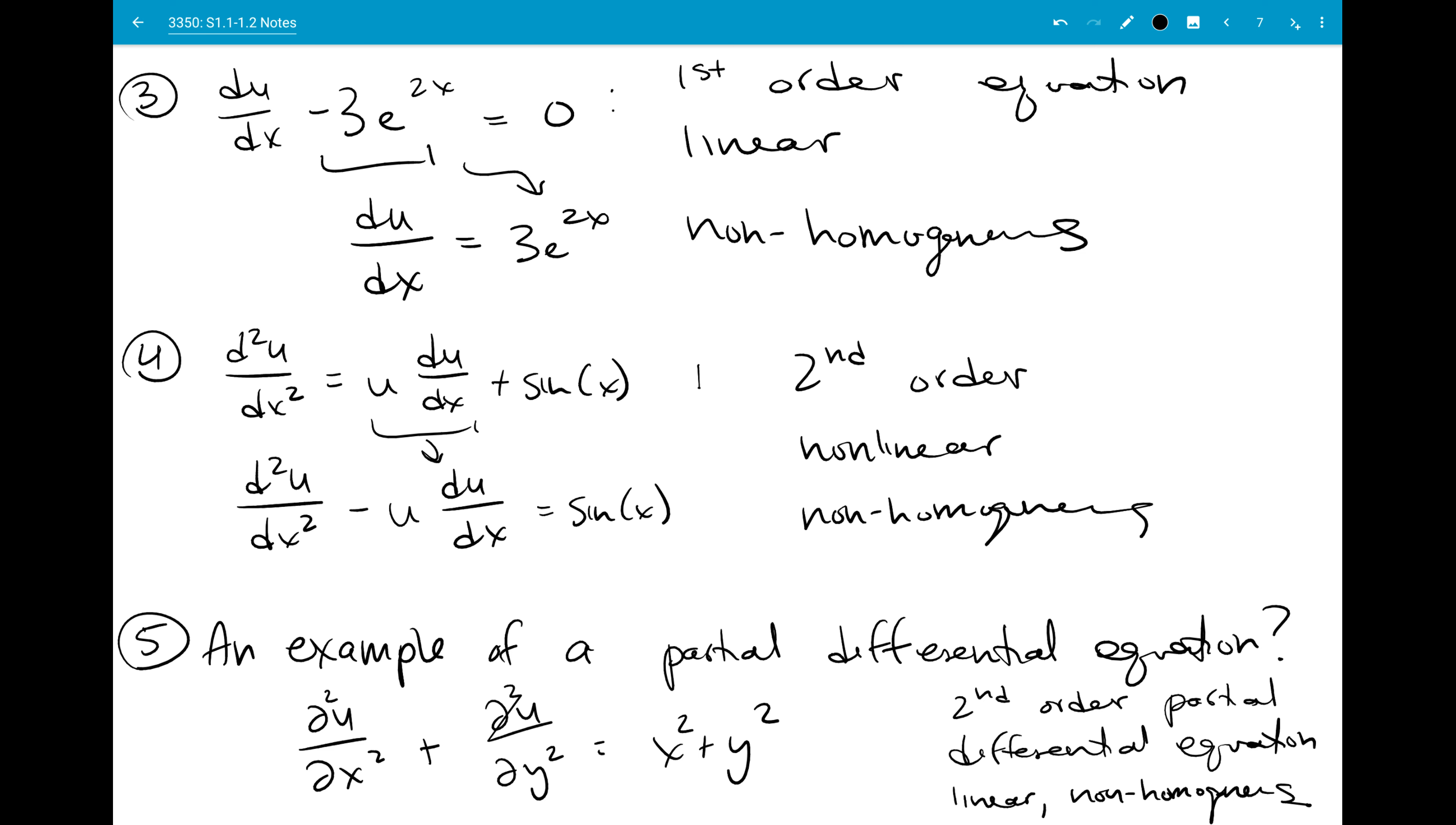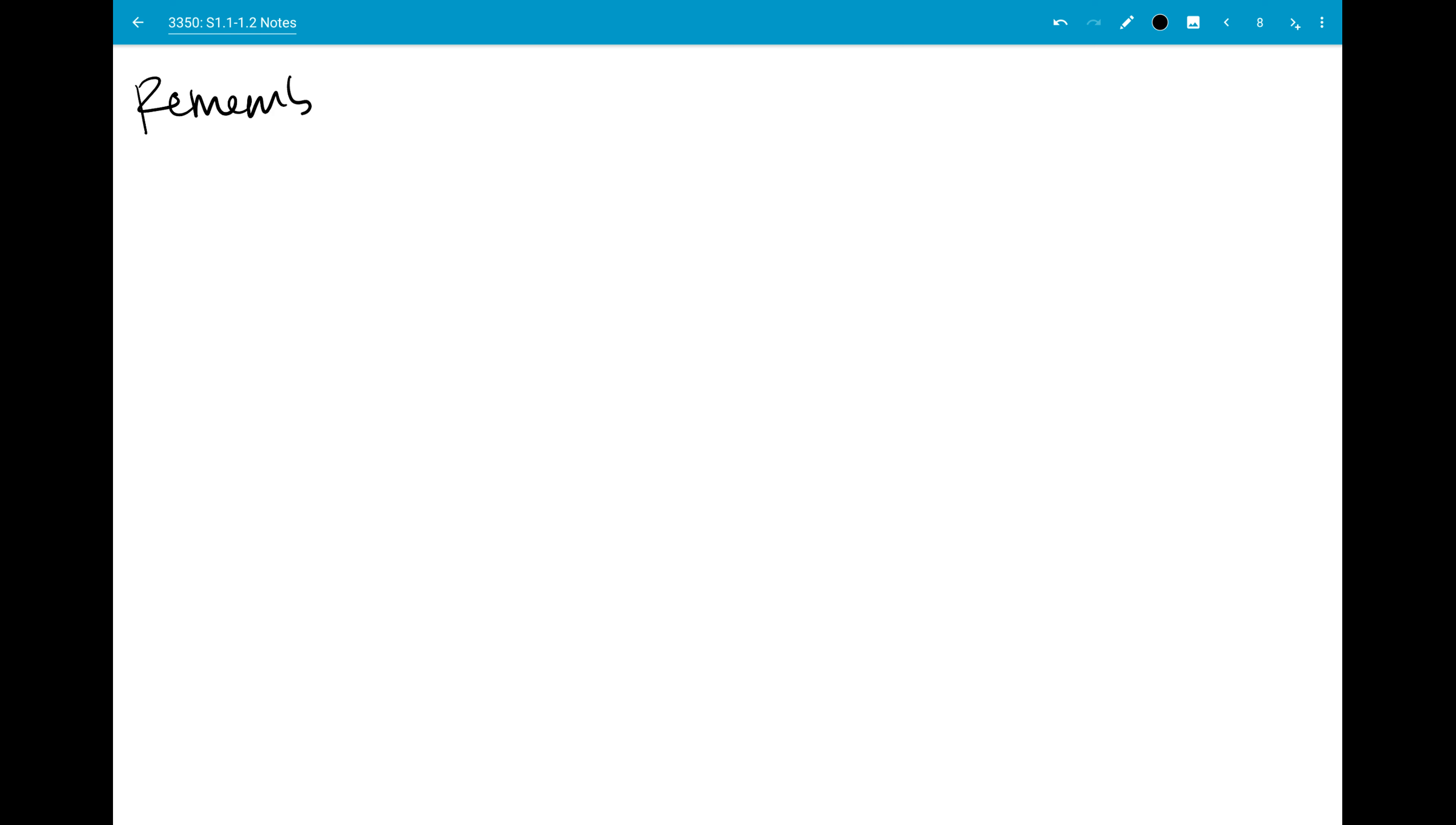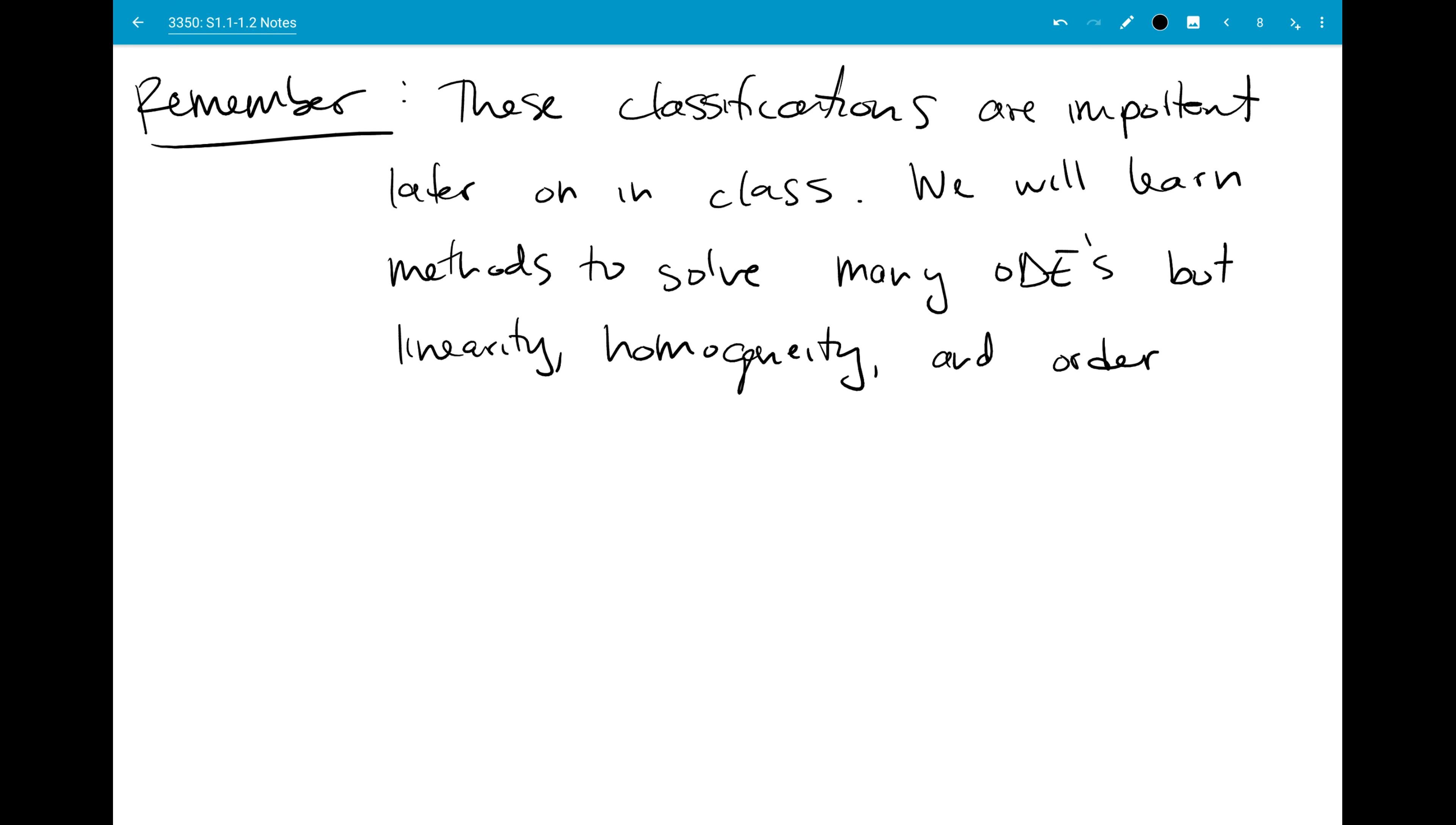And the reason why we spend so much time on all this classification is that they're going to be important later. So I know right now I'm just throwing a lot of vocabulary at you and asking you to learn it. What's going to happen is that we will learn methods to solve a lot, many ODEs. But linearity, homogeneity, and order are some of the big determinants in when you can use them. There are a couple other things that will come up, but those are the big three.